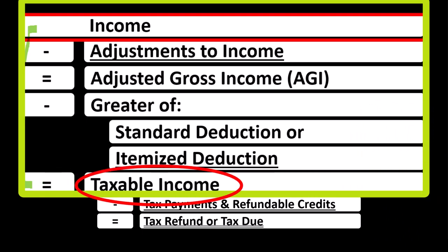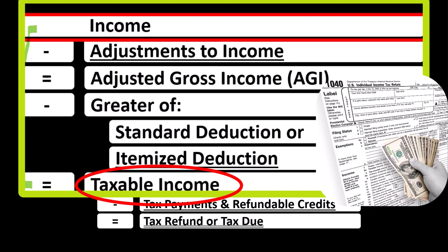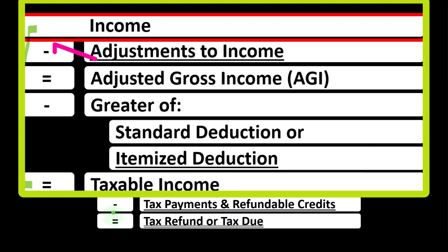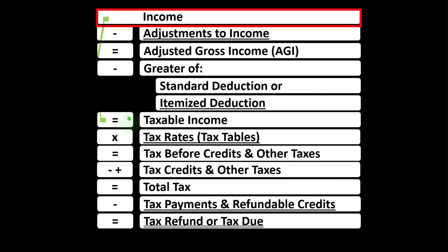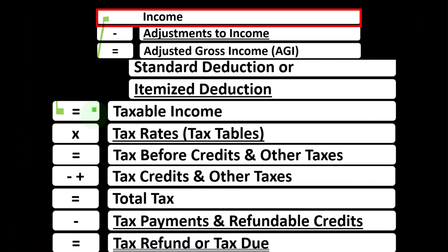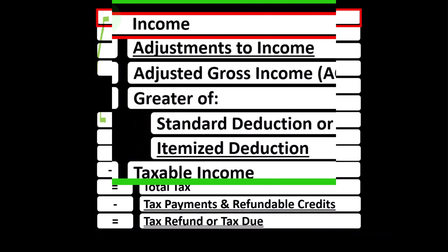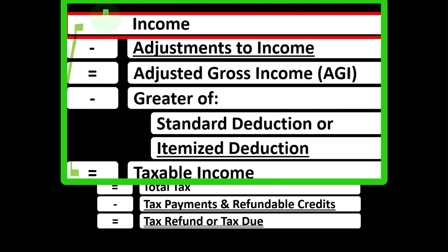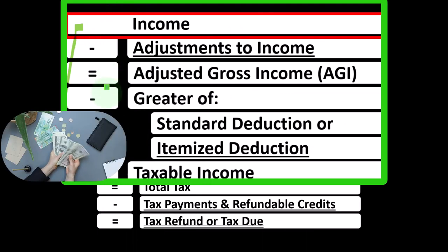The bottom half of the income tax formula calculates the tax based on taxable income, then applies credits, other taxes, and payments to get down to the tax refund or tax due. Our goal is to arrive at taxable income with our funny income statement: the top line being income, then expenses broken out as above-the-line expenses, adjustments to income, below-the-line expenses, and the greater of the standard deduction or itemized deduction.